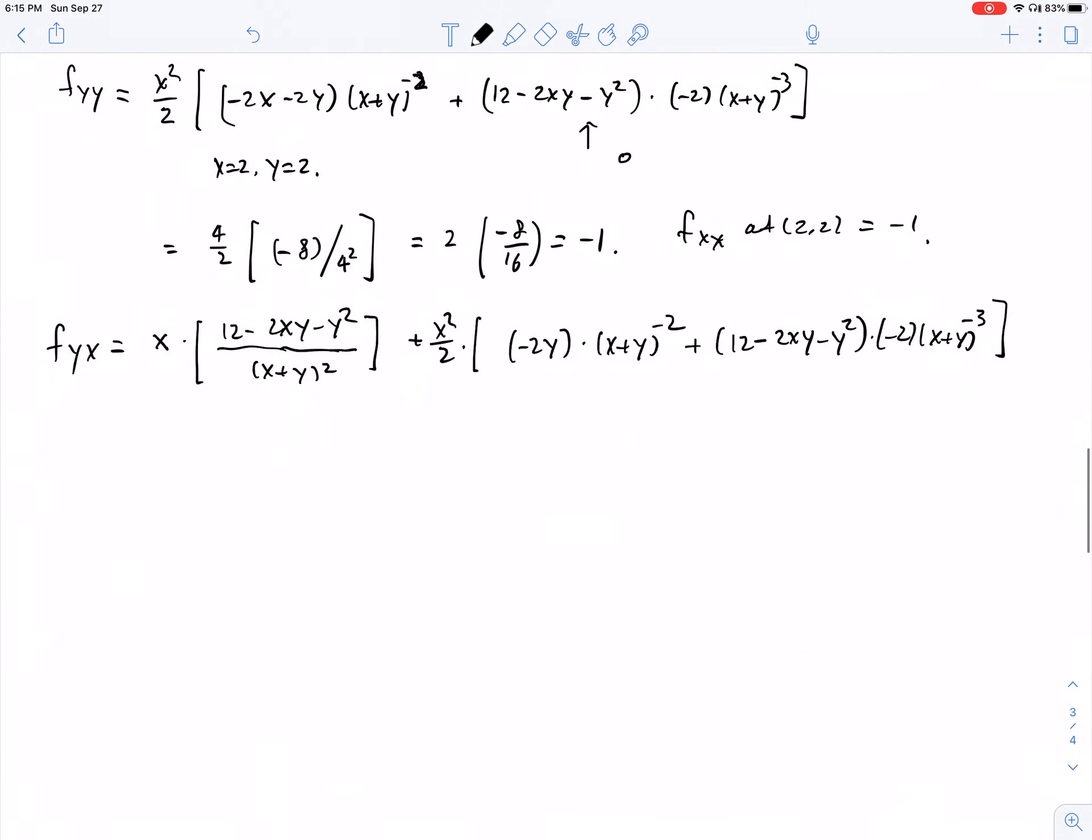And then we plug in x is 2 and y is 2. We know that this will be 0, and this is also going to be 0. So we only need to do the middle part. At x equals 2, y equals 2, f_yx is going to equal 4 over 2, and then negative 4, and then we have 4 squared, so that's 2 times negative 4 over 16, and we see this time we have negative 1 half.